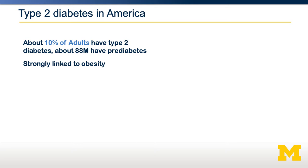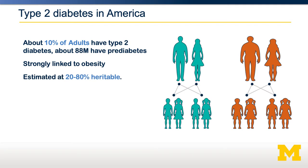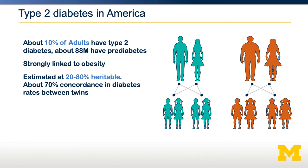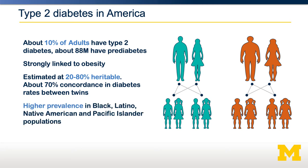It's estimated to be somewhere between 20 and 80% heritable. If you look at twin studies, there's about 70% concordance in diabetes rates between monozygotic twins, suggesting a very strong genetic component. Socioeconomically, there's a much higher prevalence of diabetes in America in Black, Latino, Native American, and Pacific Islander populations.